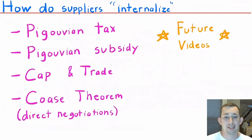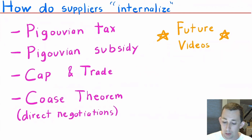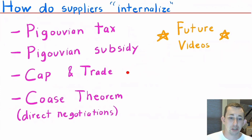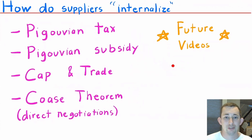How do we get suppliers to internalize this externality? How do you get me to realize that playing my music really loud is bad? How do you get Bill to realize that playing his trumpet is nice and we should have more of it? You can do things like a Pigouvian tax or a Pigouvian subsidy, cap and trade, or the Coase theorem — which is direct negotiations. We're going to talk about all of these separately in future videos, but hopefully this gives you a better idea of what externalities are. If it was helpful, make sure to like and subscribe, and we'll see you next time.